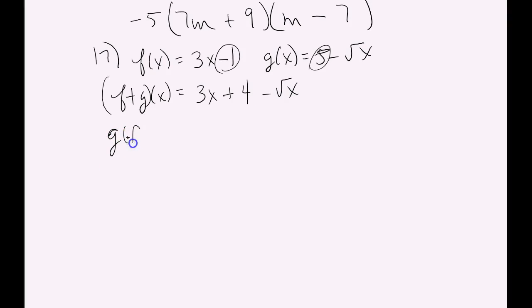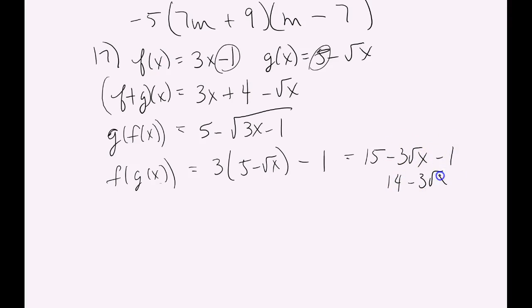We've got g of f of x. Which means that we are going to plug f into g. So if we're plugging f into g, it's gonna be 5 minus the square root of all of that. The next one would be f of g of x. So now we go the other way. Everybody that's g gets plugged into f. So it's 3 times all this mess minus 1. I wouldn't even distribute. I mean, if you want to, I've seen some teachers that are like, simplify. So that would be like 15 minus 3 root x minus 1, which is 14 minus 3 root x. So some people might want you to take it that far.